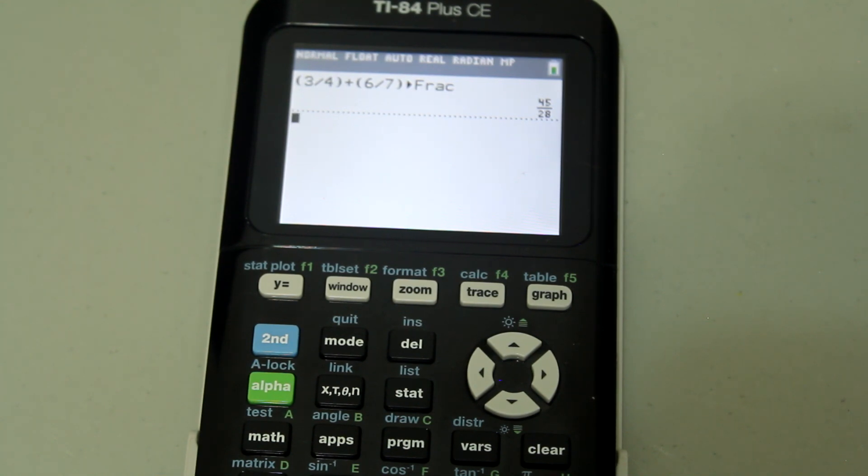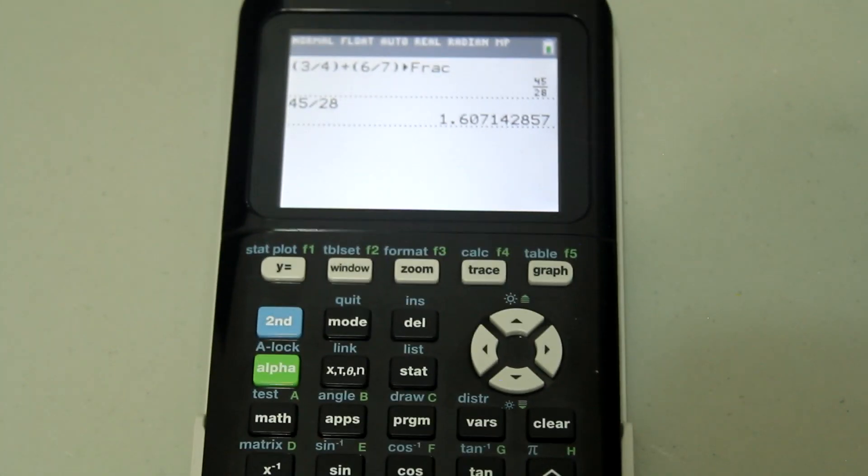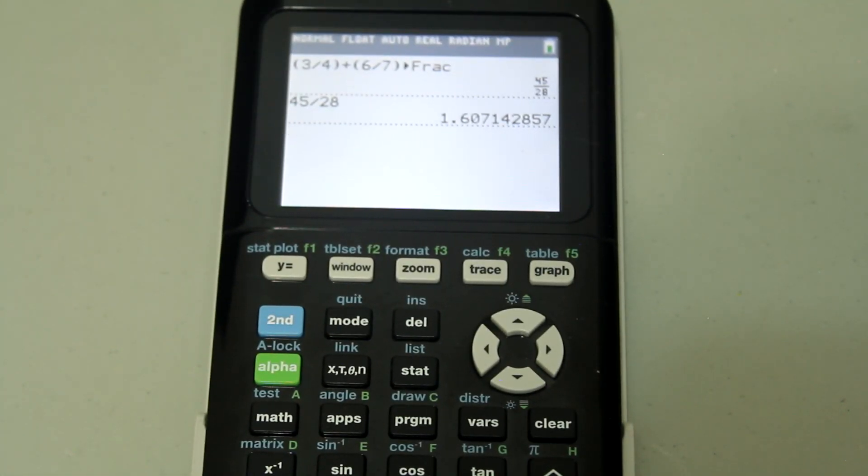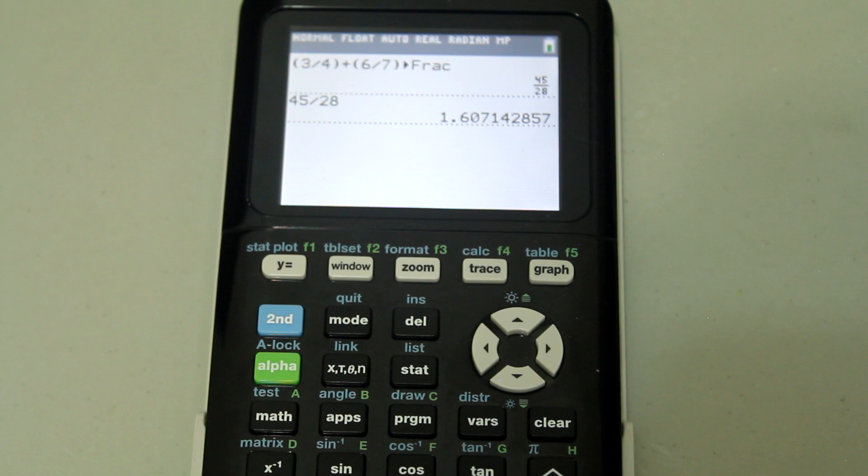And if you wanted a decimal out of the fraction easily, you can just divide 45 divided by 28 and that will give you the decimal. You don't need to go through all that hassle. However, if you intend to use mixed numbers, you probably want to use the app I showed at the beginning.